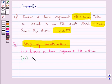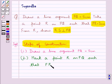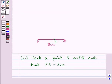In the next step, we mark a point R on the line segment PQ such that PR equals 3 cm. This is the point R such that PR equals 3 cm.